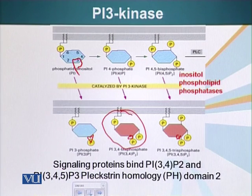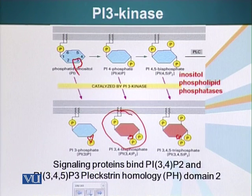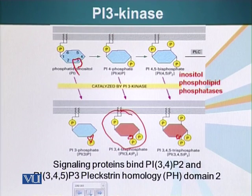There are two types of PLCs. PLC beta, for example, is activated by G protein coupled receptors. PLC gamma, on the other hand, is activated by receptor tyrosine kinases. There are about 200 proteins that have a plexin homology domain which can bind these molecules and get activated.